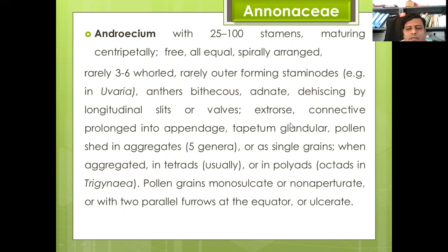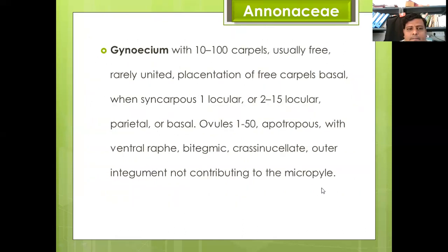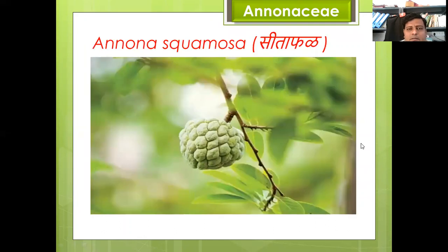When aggregate, pollen is shed in tetrads or polyads. Pollen grains are monosulcate, non-aperturate, or with two parallel furrows at the equator, or ulcerate. Gynoecium shows 10 to 100 carpels, usually free, rarely united; placentation free-carpal, basal; syncarpous forms one-locular or two-locular. Ovules one to fifty, apotropous with ventral raphe, bitegmic, crassinucellate; outer integument not contributing to the micropyle.